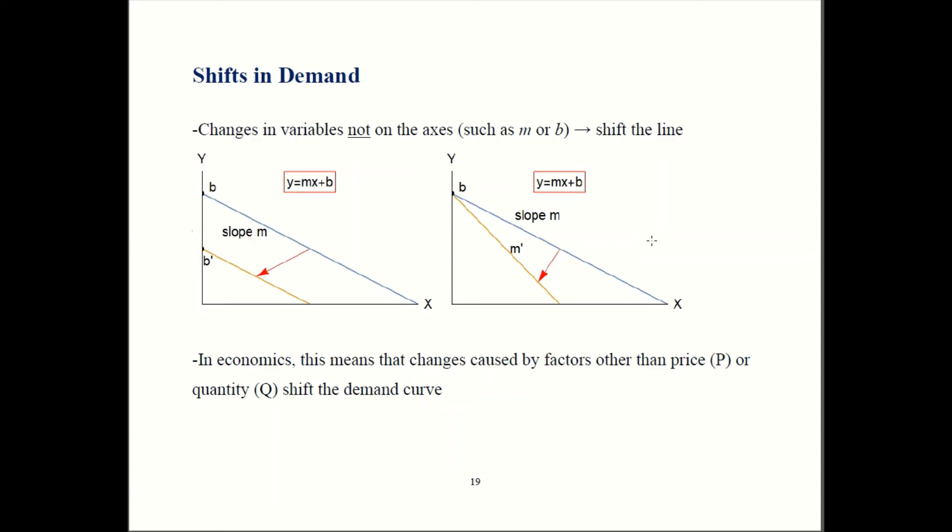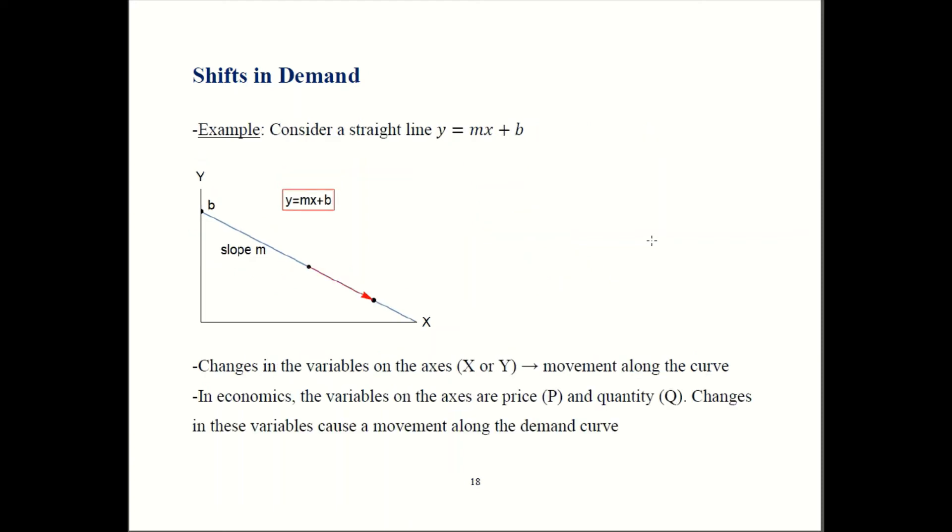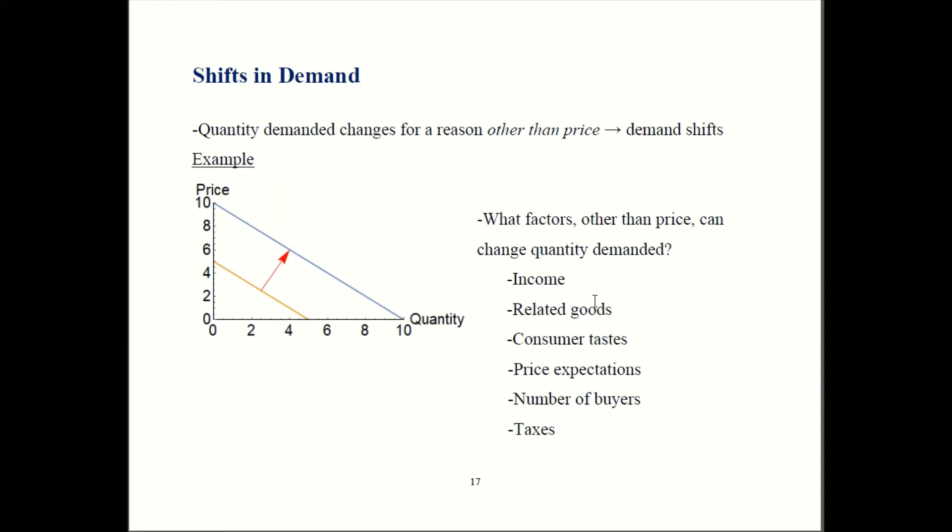So we're seeing that if you change a variable on the axes, you move along the same curve. If you change a variable that's not on the axes, that shifts the curve. So in economics, because you have price and quantity on the axes, these other variables - these things other than price and quantity - would be things like income and consumer tastes, all those things that I listed out here. All these things are not on the axes. That's why they can shift demand.